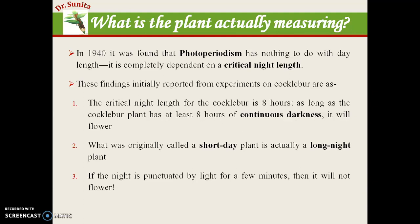In 1940, it was discovered that photoperiodism has nothing to do with the day light. The actual critical factor is the critical night length — whether the night period is short or lengthy. On the basis of these findings, the plant was identified as a long night plant, based on experiments with cocklebur plants with an 8-hour critical night length. If that condition is not met, the plant will not flower.